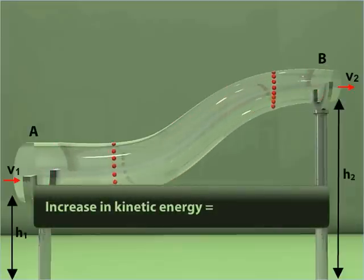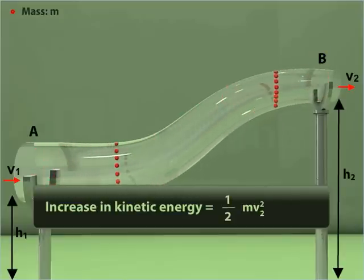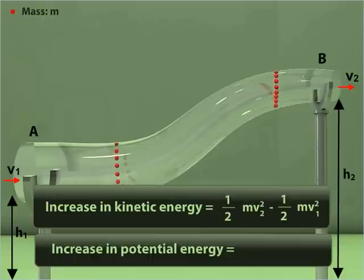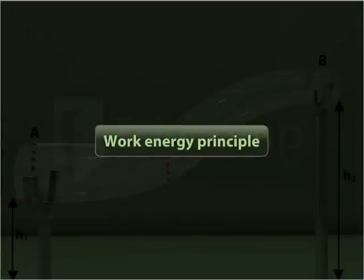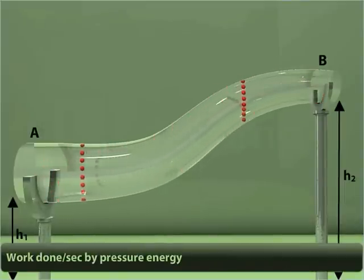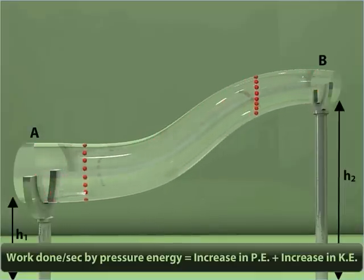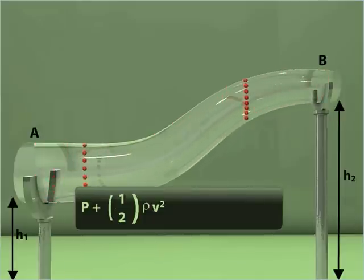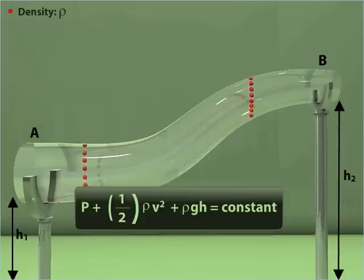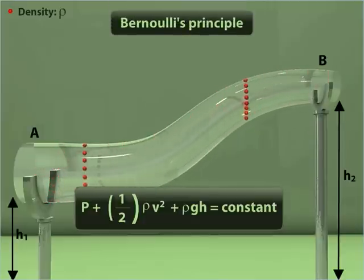The increase in kinetic energy from point A to B is given as ½mv₂² − ½mv₁². The increase in potential energy from A to B is given as mgh₂ − mgh₁. According to the work-energy principle, the work done per second by the pressure forces equals the sum of these energy changes, and the total is equal to a constant. This proves Bernoulli's Principle.